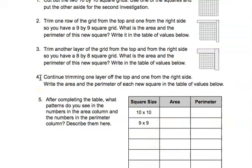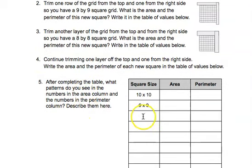Continue trimming one layer off the top and one from the right side. Write the area and perimeter for each new square. So after 8 by 8 you should have 7 by 7, then 6 by 6, 5 by 5, and so on.